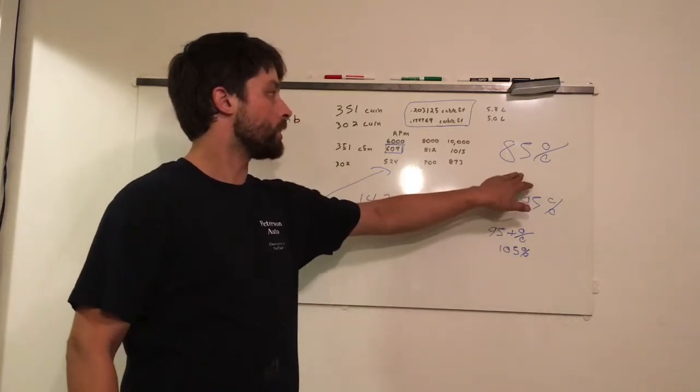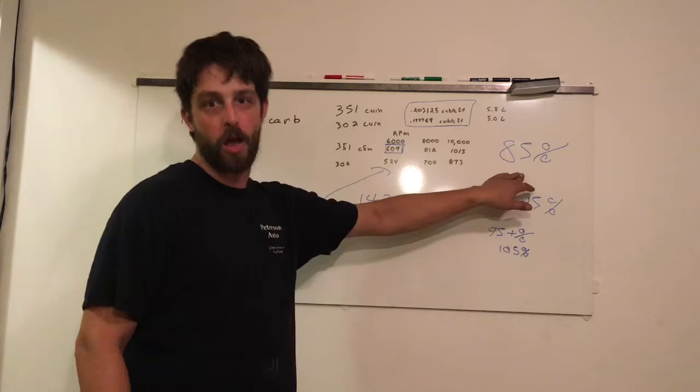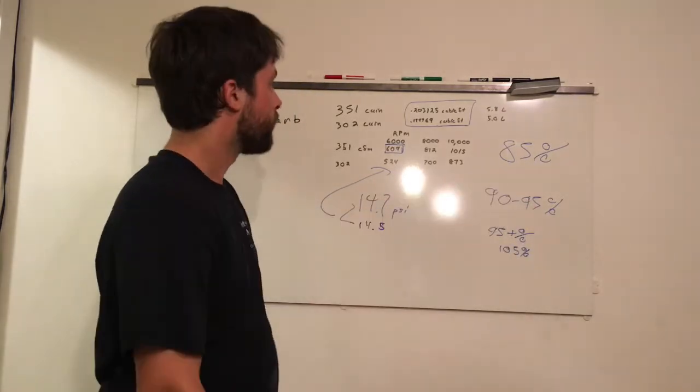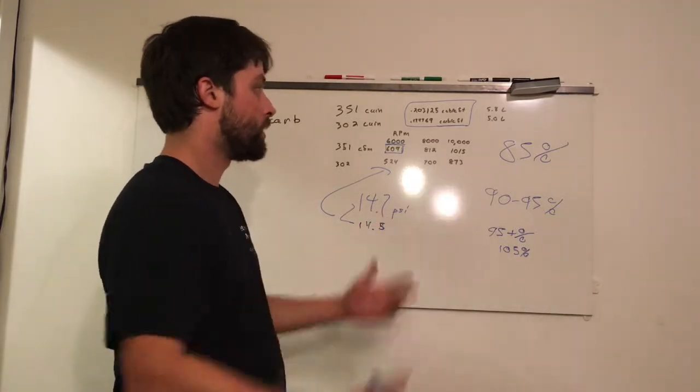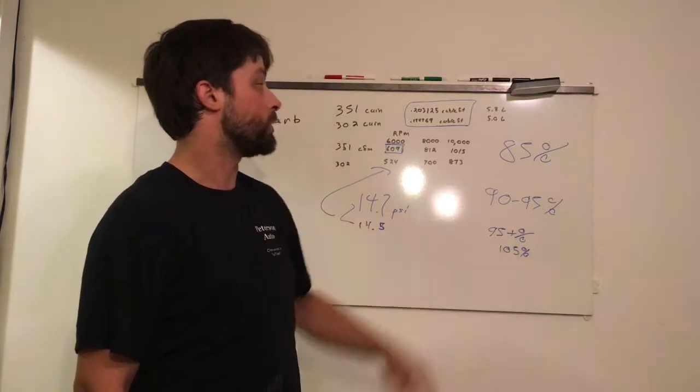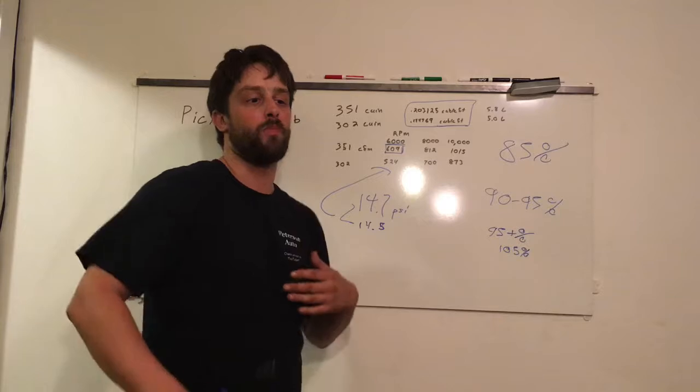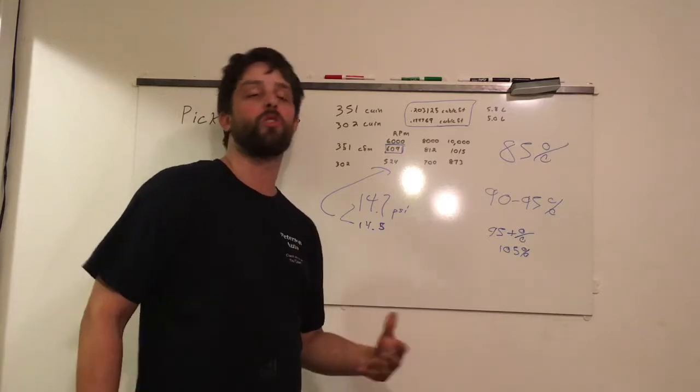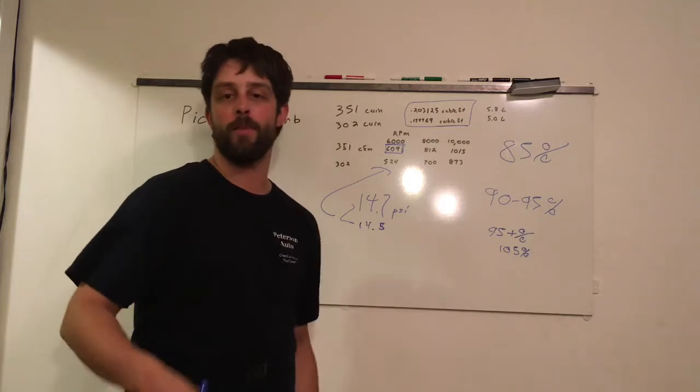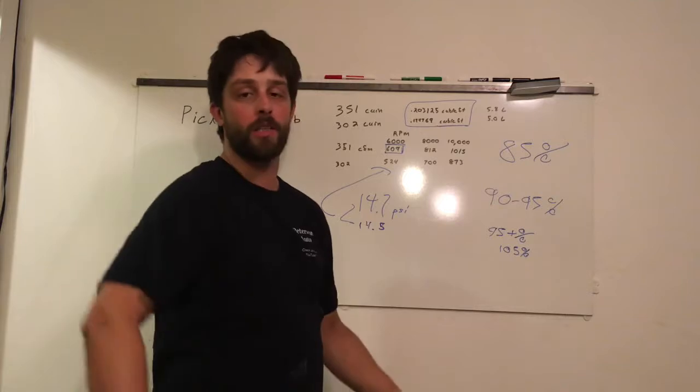So now we're going to go back to the good old beater Chevy pickup there with a 350 small block and two bolt mains with a four barrel carburetor. We're going to say that would be 85% efficiency. Now we're going to go to your 351 Windsor Mustang, nice driver car. You want it to drive well, but you put on an intake, some heads, maybe a mild street cam, 90 to 95%.